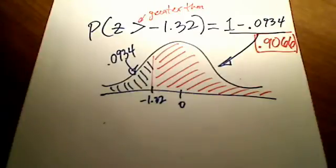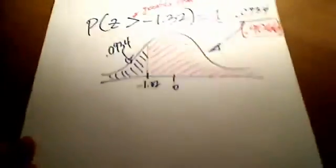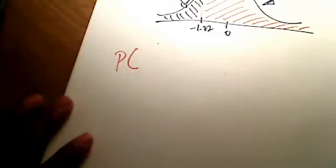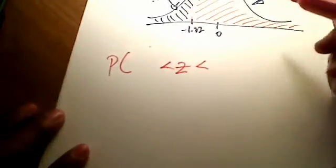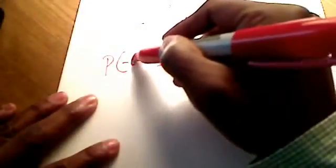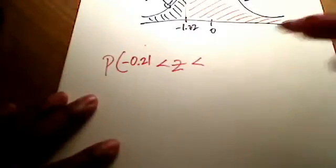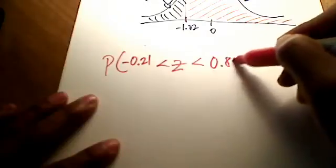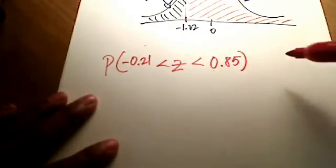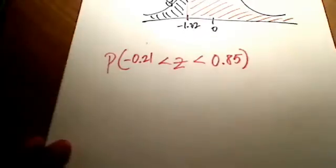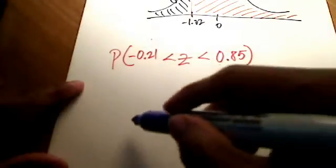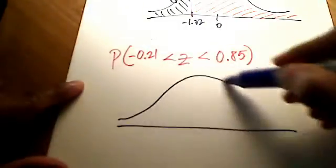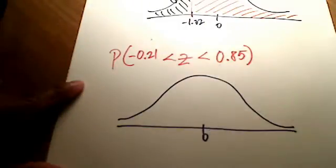One more last example. What if sometimes they want you to shade in between? So sometimes you get a problem where they say, look, find the probability that we have some z number and we're looking for the stuff that's in between. How about negative 0.21, I'm just making these up here, 0.85. This time I want the area that's in between those two z numbers. Let's go to the picture. A picture says a thousand words.